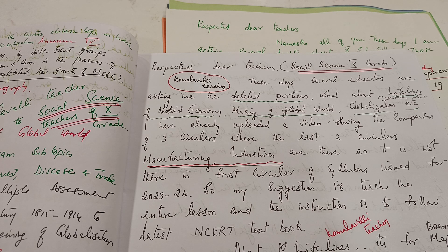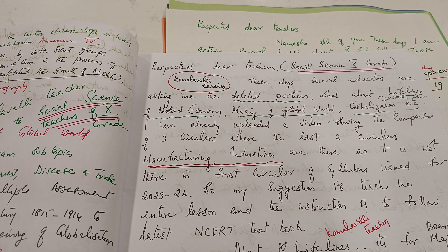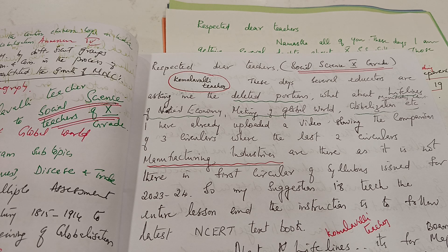These days I am getting several doubts. Several educators are asking me about the deleted portions, and their queries are related to the Lifelines of National Economy, Making a Global World, and Globalization lessons, which are part of the interdisciplinary project. This year CBSE has issued three circulars regarding the syllabus. In the latest two circulars, the Manufacturing Industries lesson is mentioned, so that is very important. Those who have copies of the first circular only will miss this.